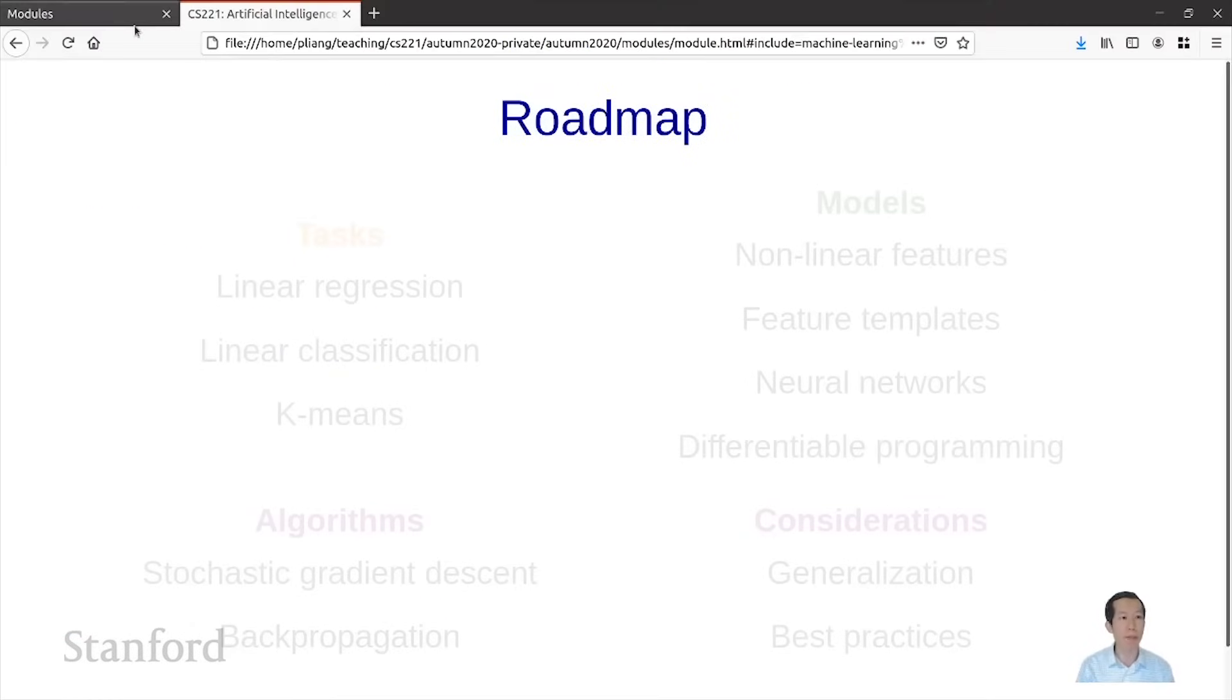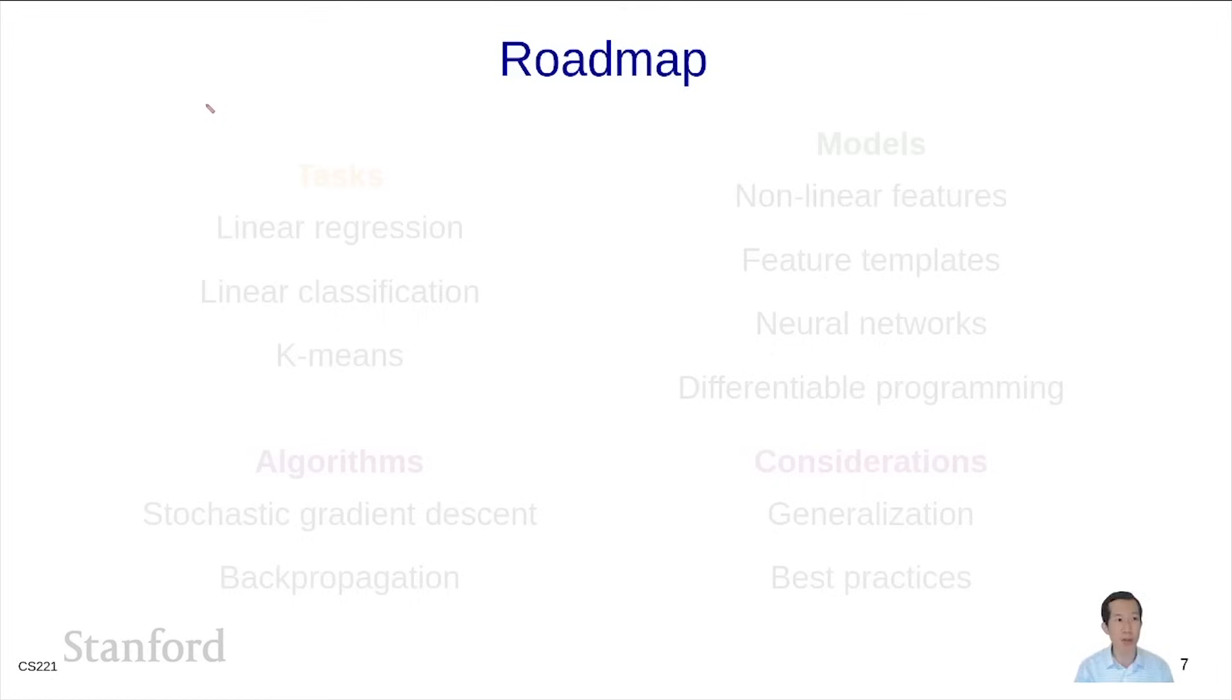Here is the roadmap of the rest of the modules in machine learning. First, we're going to start with regression and classification, the bread and butter of machine learning. We're going to focus on the most simple settings, linear models where we're training using gradient descent.